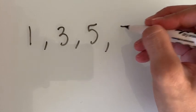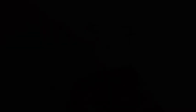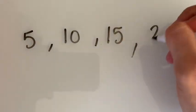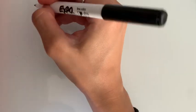Another example is one, three, five, seven, and so on. Last example is five, ten, fifteen, twenty, and so on. It goes by fives.